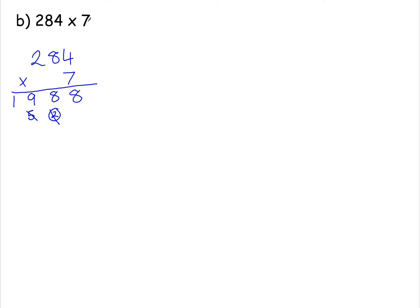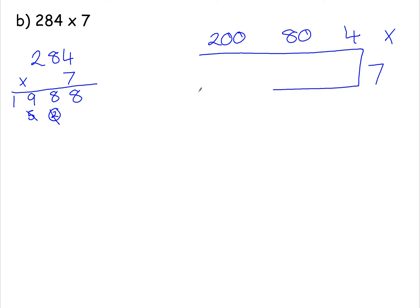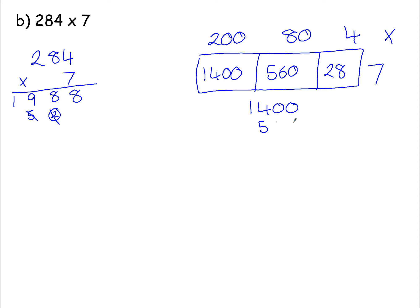For the box method, split 284 being multiplied by 7. Draw a box, give each number a box each. 4 times 7 is 28. 80 times 7 is 560. 200 times 7 is 1,400. Then add these numbers together using a tower sum — units under units, tens under tens, hundreds under hundreds. 0 add 0 add 8 is 8. 0 add 6 add 2 is 8. 4 add 5 is 9, and then the 1. Notice we get the same answer: 1,988.